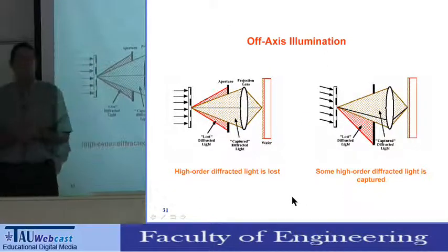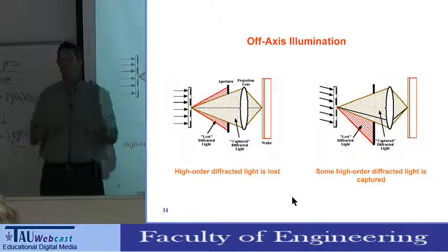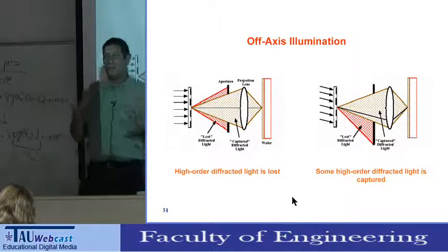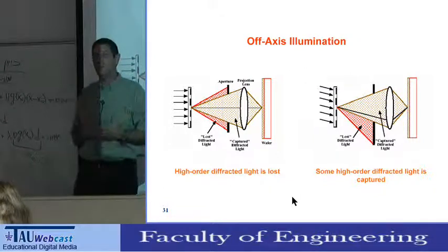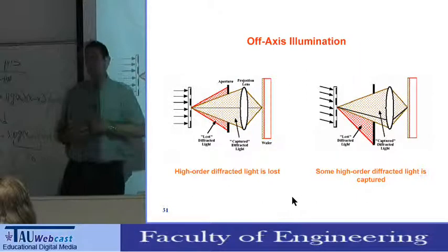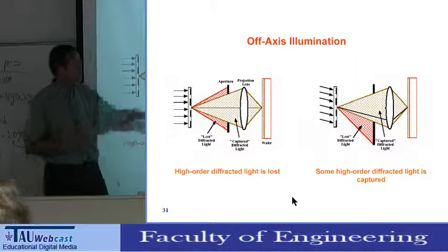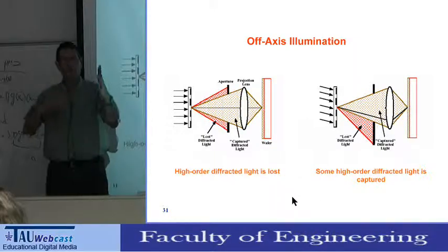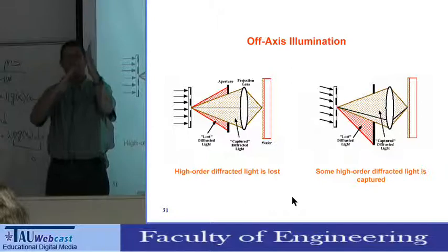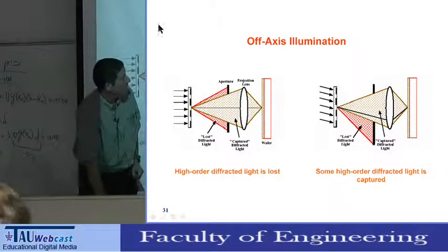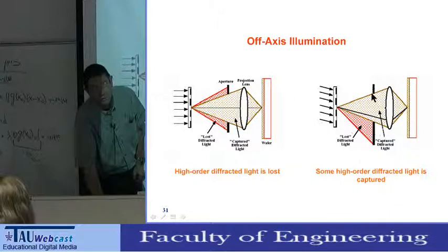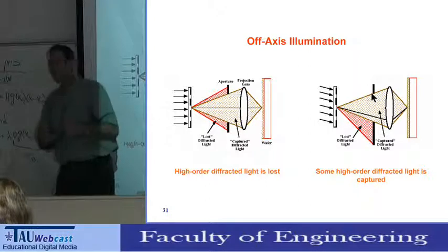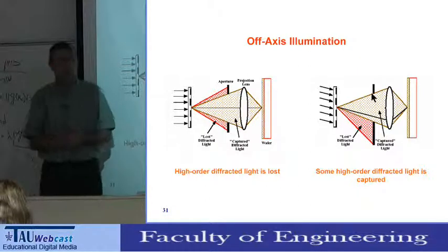What I showed you last time: if you want to solve a problem, there are two methods. First, understand it and try to overcome it. Second, find a trick — find something that is kind of revolutionary. One idea which most people use to achieve better resolution is what's called off-axis illumination. You don't illuminate perpendicular to the mask; you illuminate at an angle. By illuminating at an angle, you find that the zero-order diffraction and the first-order diffraction allow your mask to capture the first-order, which gives better resolution.